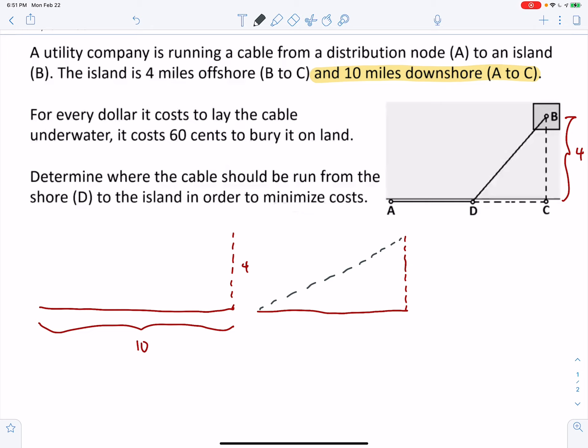So we're going to assume that it follows this path. We go from A to D, and then we go from D to B. So we need a variable. And since this is the side in question, we know that whole thing is 10. I need to call one of the sides X. I need to call the other side 10 minus X.